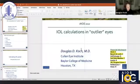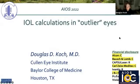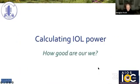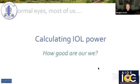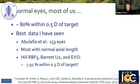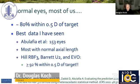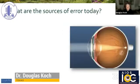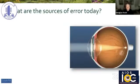I was asked to talk about IOL calculations in what I call challenging or outlier eyes. Pertinent disclosures are listed to the right. So how good are we in doing our calculations? In normal eyes, most of us are about 80% within a half diopter of target. The best data I've seen come from Avalafia in a paper published recently — 92% within a half diopter. That's the goal to which we all aspire, but there are a group of eyes for whom that doesn't work and we are still challenged.